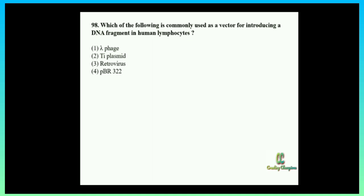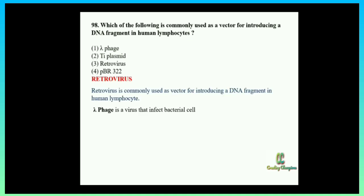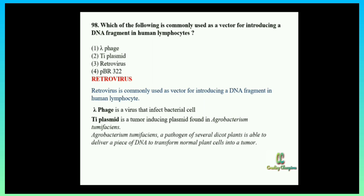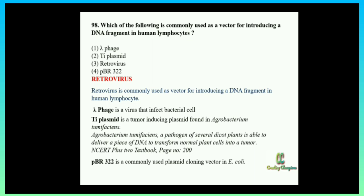Lambda phage is a virus that infects bacterial cells. Ti plasmid is a tumor-inducing plasmid found in Agrobacterium tumefaciens, a pathogen of several dicot plants, used to transform normal plant cells into tumors. pBR322 is a commonly used plasmid cloning vector in E. coli. The answer is retrovirus, because retrovirus is commonly used as a vector for introducing a DNA fragment in human lymphocytes. If we know the vectors, we can directly answer the question.